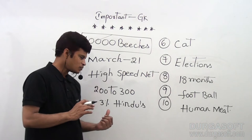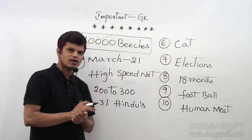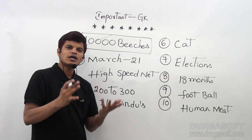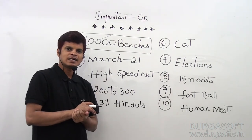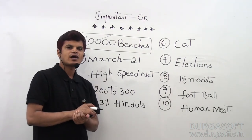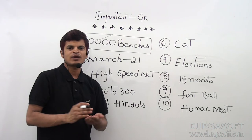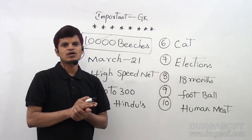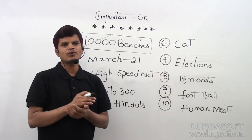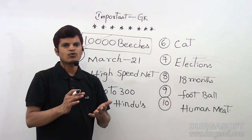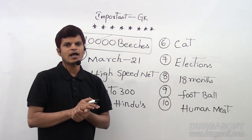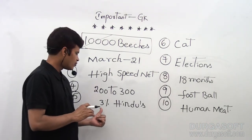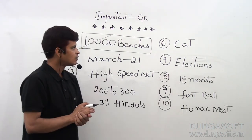In this country, there are only 3% Hindus. What country? Cambodia. In Cambodia, there are only 3% Hindus, but where is the temple? Angkor Wat. Angkor Wat is in Cambodia. Only 3% of Hindus — okay.